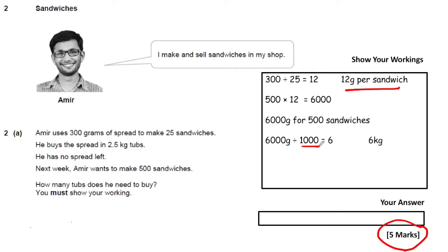The spread comes in 2.5 kilogram tubs. You can work this out by adding up 2.5 plus 2.5 to find how many tubs he needs. Three times 2.5 is 7.5 kilograms. If he only bought two tubs — two times 2.5 — he'd only have 5 kilograms, which isn't enough. He'd be a kilogram short for making his sandwiches.